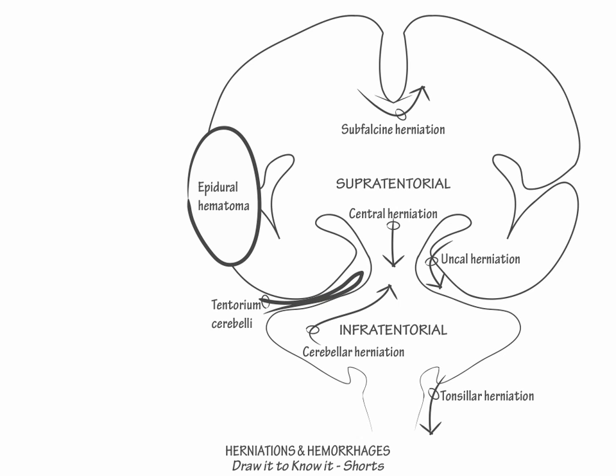Subdural hematoma collects within the loosely filled dural border cell layer, so show that this low-pressure blood spreads out along the border cell layer in a crescent shape.